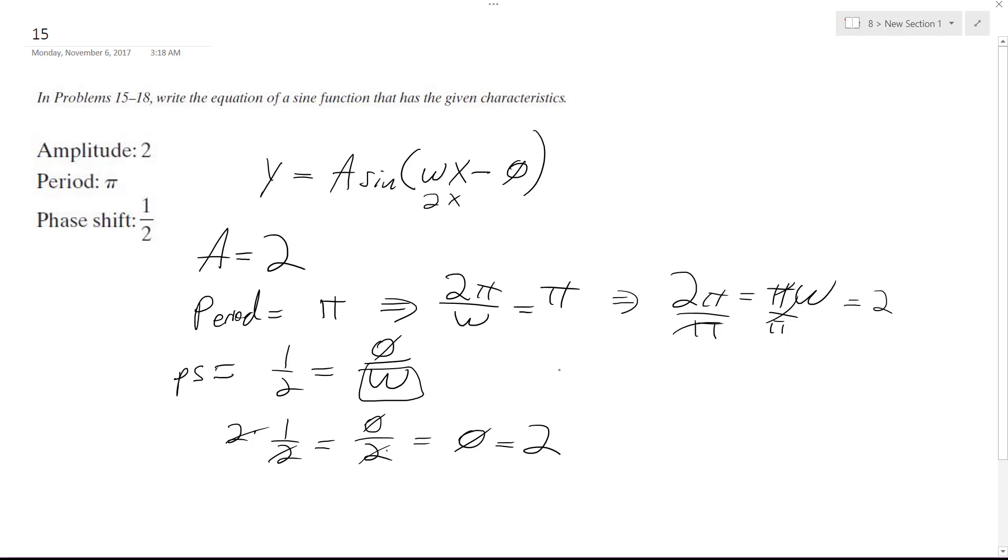All right, or excuse me, equal to 1. So rewriting this: y equals 2 times the sine of 2x minus 1.